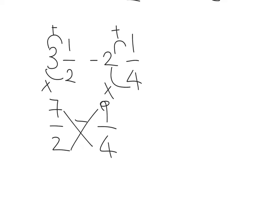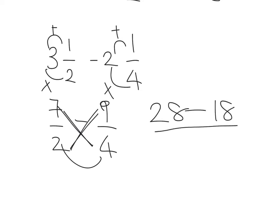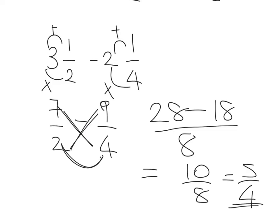Kiss and smile for adding and subtracting fractions. Start at the top left hand side: 7 times 4 is 28, minus 9 times 2 is 18, over 2 times 4 is 8. 28 take away 18 is 10, so 10 over 8. That can be simplified down to 5 over 4.